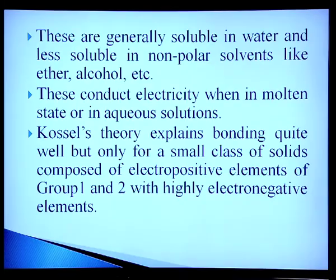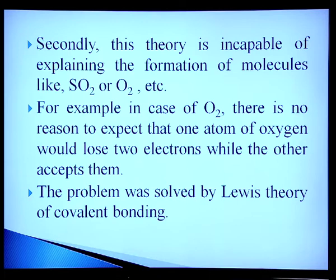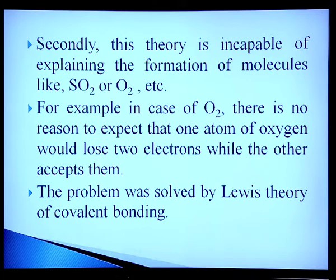These compounds have high melting and boiling points due to strong electrostatic interaction between the ions. They are less soluble in non-polar solvents but more soluble in polar solvents — ionic compounds are soluble in water but insoluble in alcohol, ether, etc. These compounds conduct electricity when in molten state or in aqueous solution. Kossel theory explains bonding quite well, but only for solids composed of electropositive elements of groups 1 and 2 with highly electronegative elements of group 17. It is incapable of explaining the formation of molecules like SO₂ or O₂. The problem was solved by Lewis theory of covalent bonding.